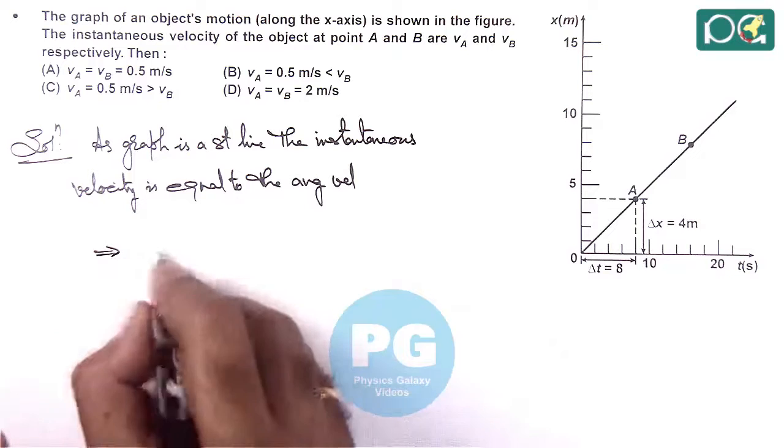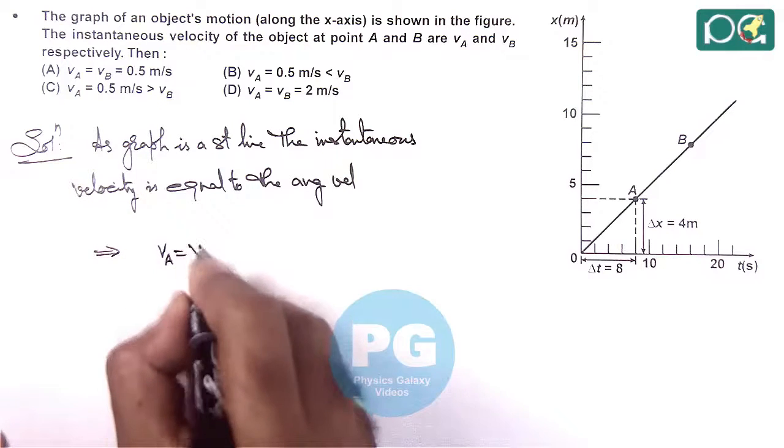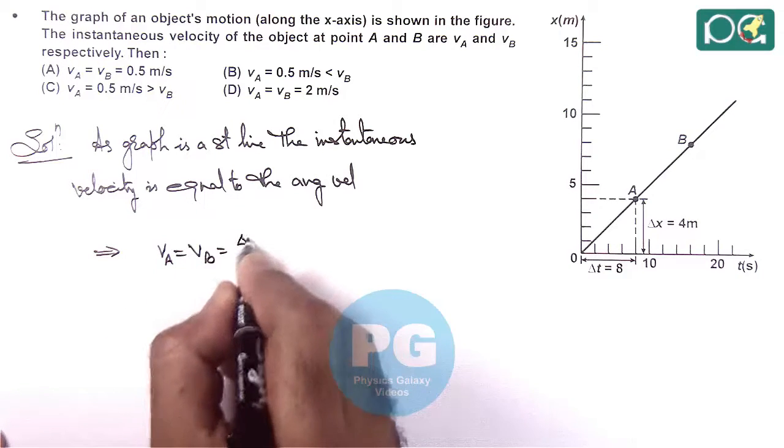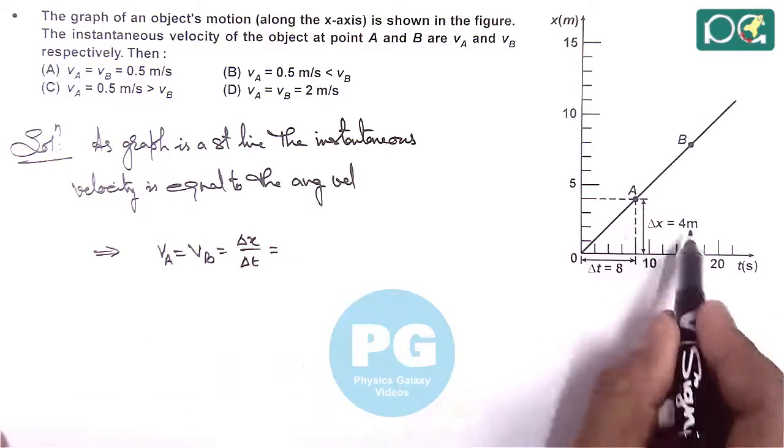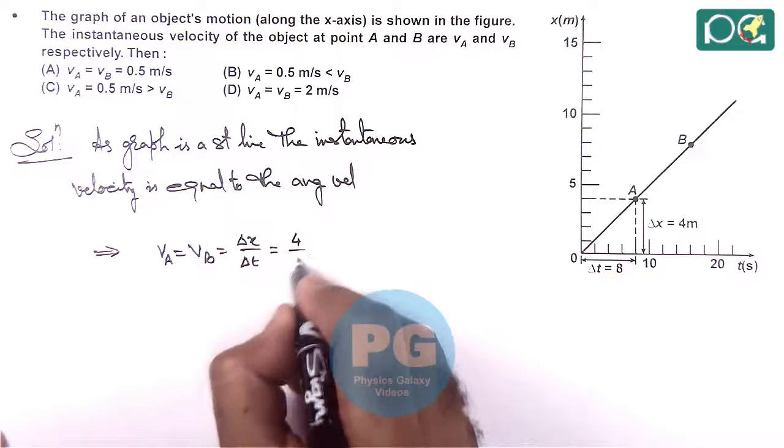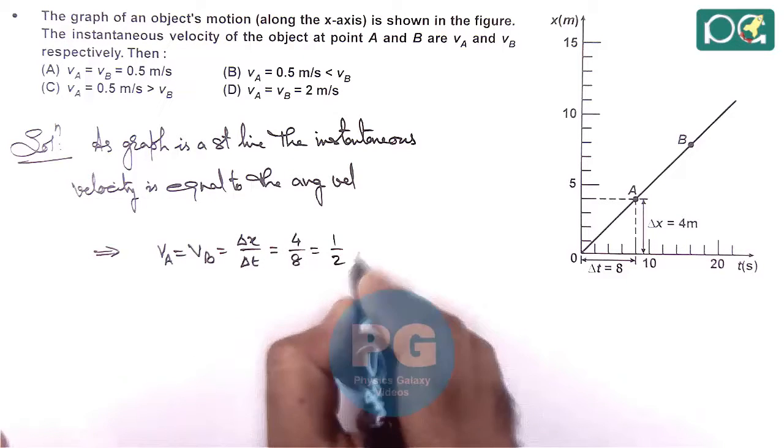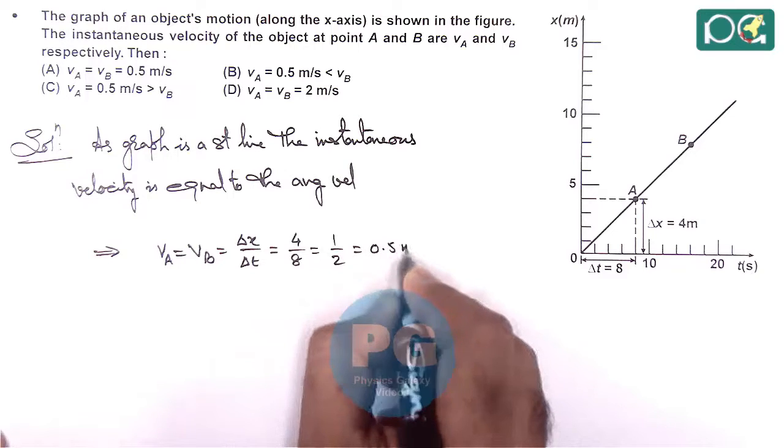And here we can write, V-A is equal to V-B and this can be written as delta x by delta t. And here we can substitute the values from the data. So this is 4 by 8. This is 1 by 2 or it is 0.5 meters per second.